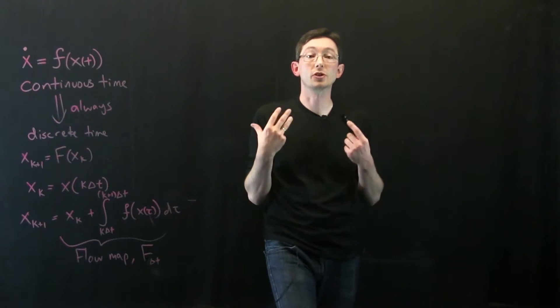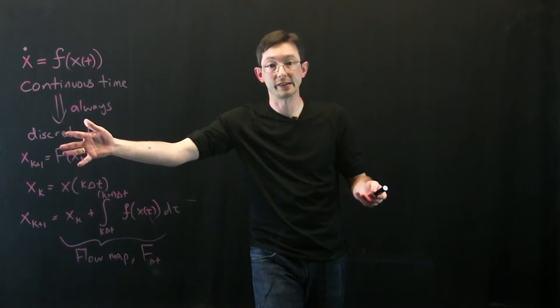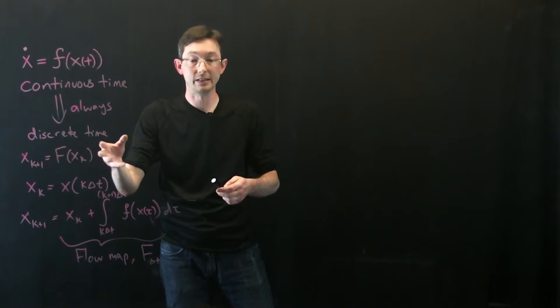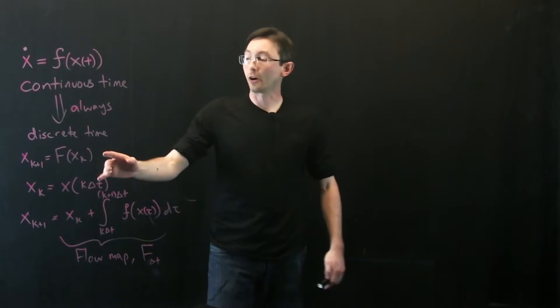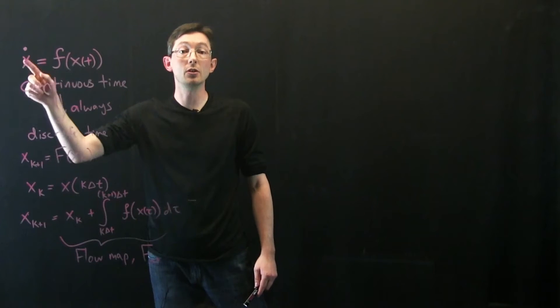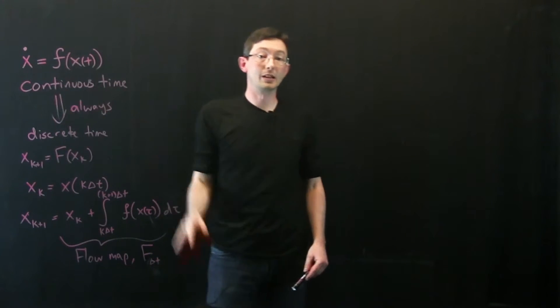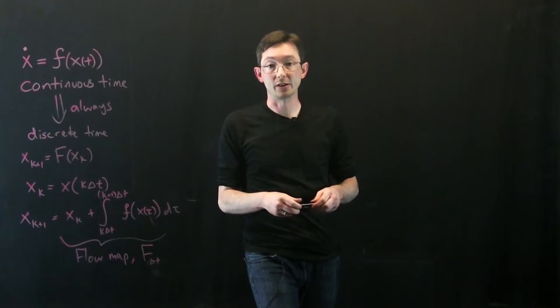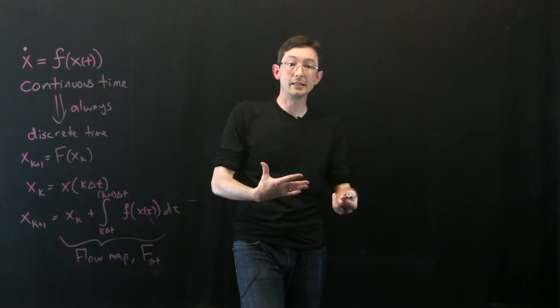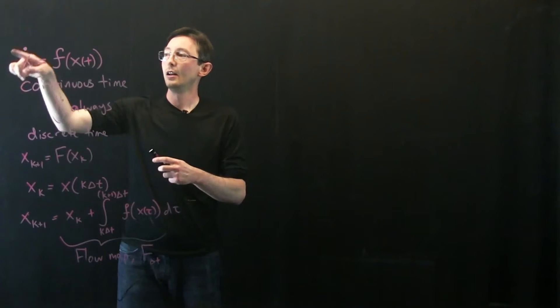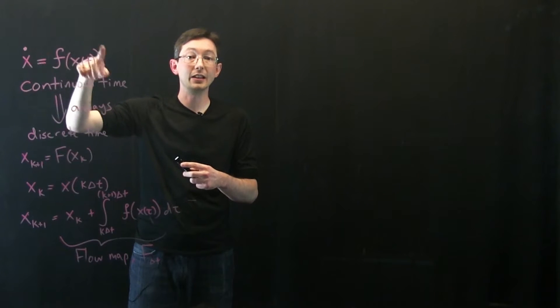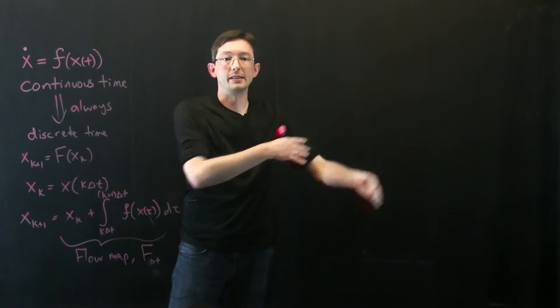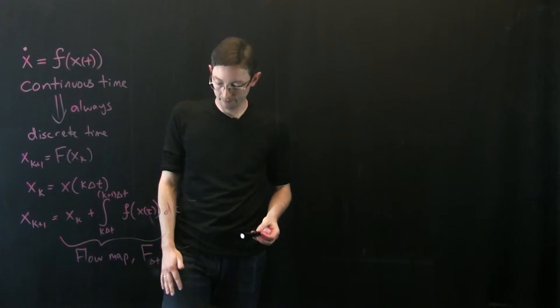So discrete time dynamical systems are much more general. There's more discrete time dynamical systems than there are continuous time. Every single continuous time dynamical system can be written in discrete time using this flow map but there are lots of discrete time dynamical systems where there is no continuous time analog, where they're not integrating some continuous time process. So one example could be in real population dynamics there are these discrete events and seasons and things like that. So it's hard to model population dynamics as a continuous time system if there really are these kind of discrete events that happen like there's spring and there's winter and things like that.